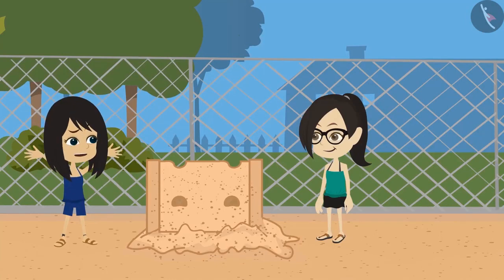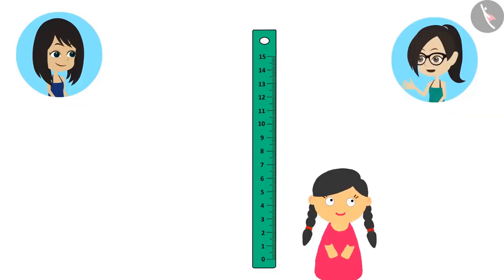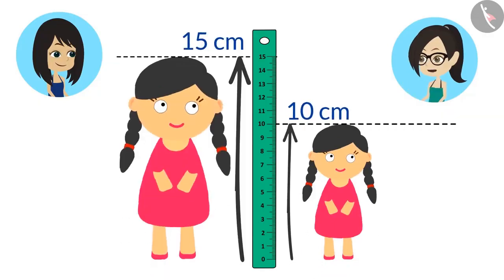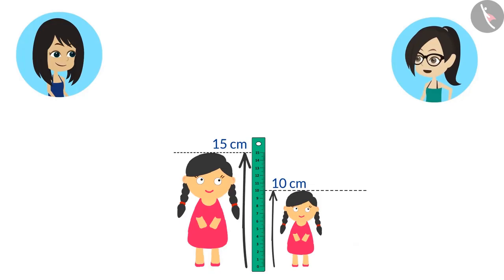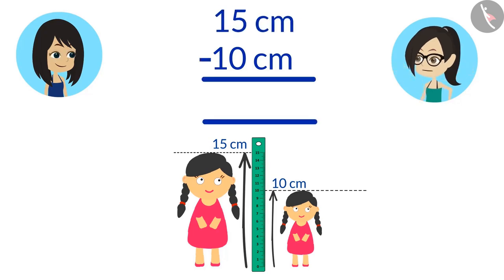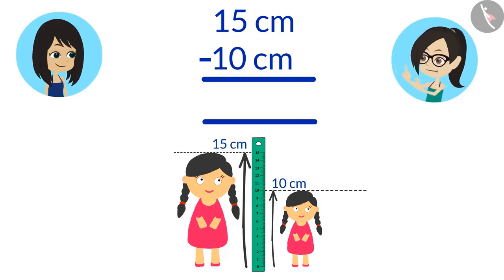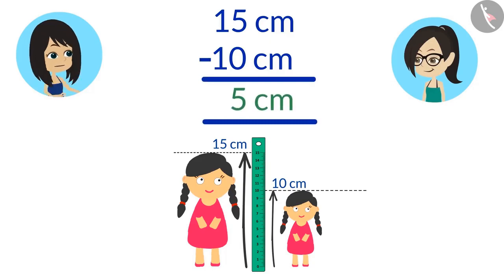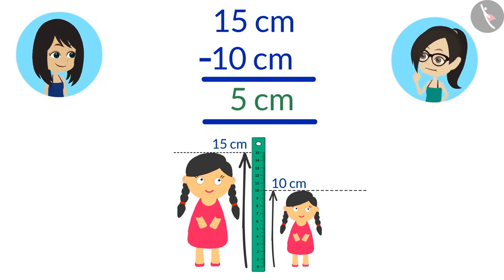'How much taller is your doll than my doll?' 'That's easy to find. Your doll is 10 centimeters tall and my doll is 15 centimeters tall. If we subtract the height of your doll, 10 centimeters, from the height of my doll, 15 centimeters, we get 5. So your doll is 5 centimeters taller than my doll.'